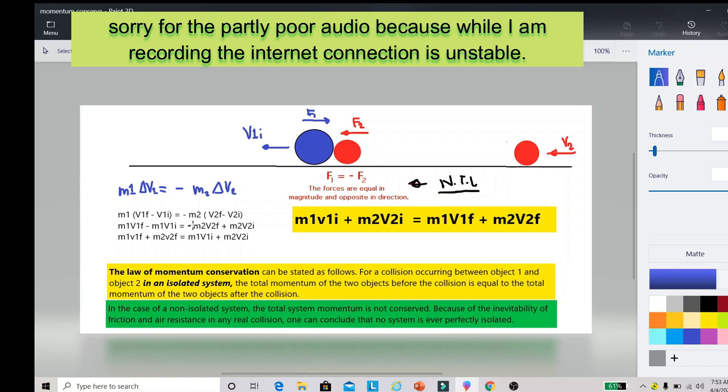Now if we try to distribute m1, we have m1 v1 final minus m1 v1 initial. On the other side we have m2, we have to distribute that. Therefore we have negative m2 v2 final and that will be plus, because negative multiplied by negative will become positive, therefore positive m2 v2 initial.